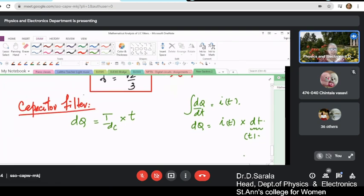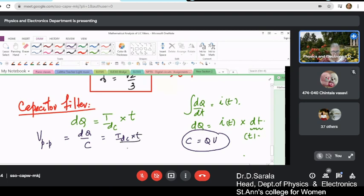With this relation, the voltage can be written as - that is the peak to peak voltage can be written as C equals qV. I think you know this relation. So, the voltage developed can be written as dq/C which is equal to I_DC into t by - what is this C? The capacitance value.